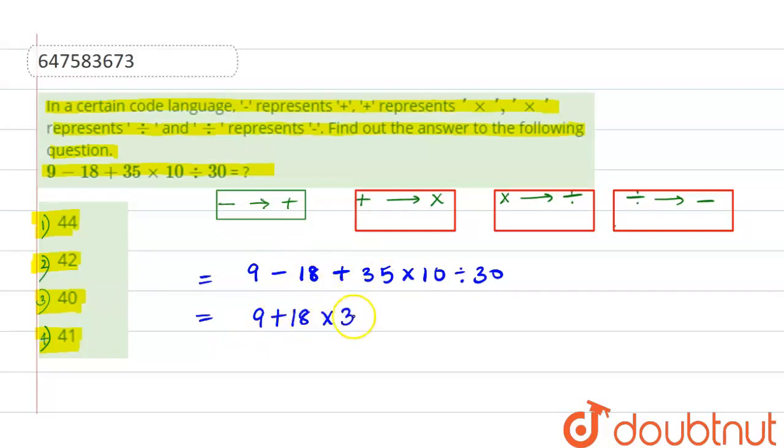And then, plus we have to put multiply: 35. And then, multiply ki jagah we have to put divide: divided by 10. And then, divide ki jagah we have to put minus.